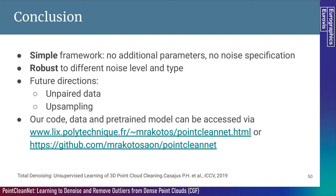To conclude, PointCleanNet is a simple framework for cleaning point clouds that does not need any tuning of the parameters. It is robust to different levels and types of noise, and can be adapted to specific data from different scanning methods. One limitation is that we need a pairing between noisy point clouds and ground truth clean ones. Since we published the paper, some methods such as total denoising achieve similar results using unsupervised learning. We could also use our architecture on different applications like super-resolution of point clouds. Our code is available on GitHub, where you can clean point clouds using our pre-trained models or train new models on new datasets.